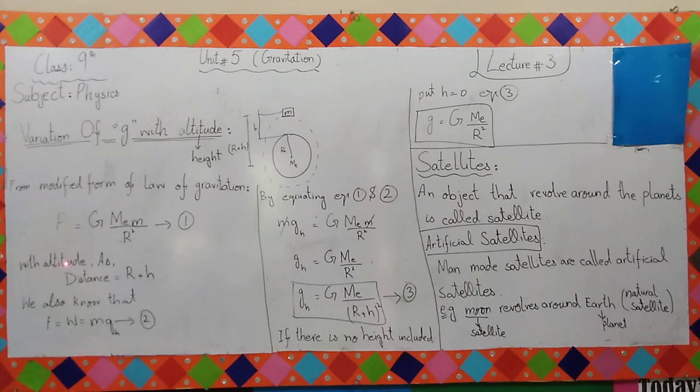With altitude, if your altitude is included, meaning that height is included, then what is the distance? R plus h, like you have seen in the diagram. Where is the distance? From the center to the edge, from the box which is the distance above the place.